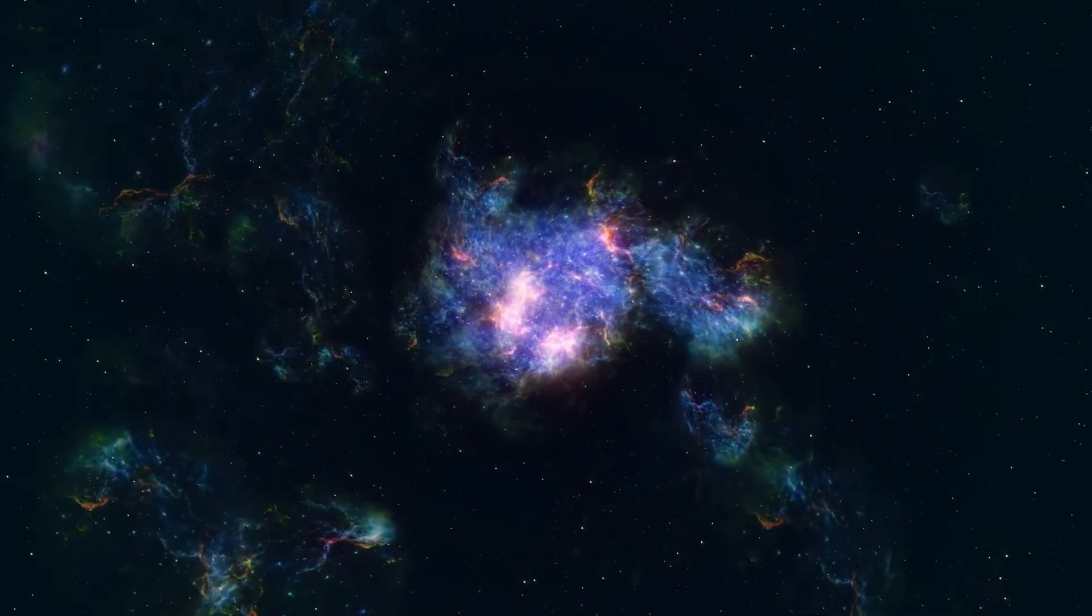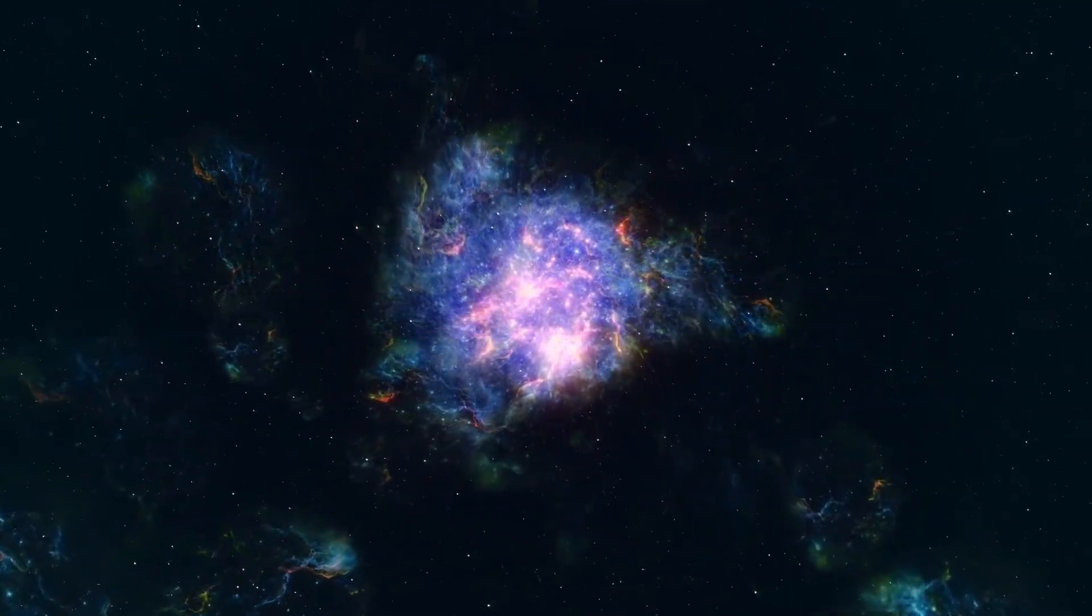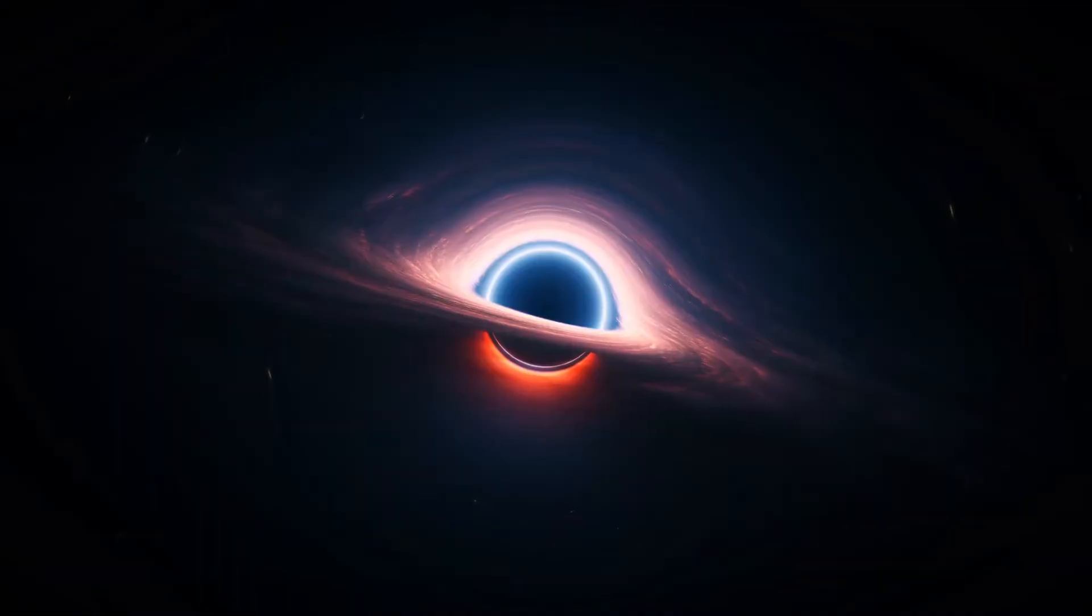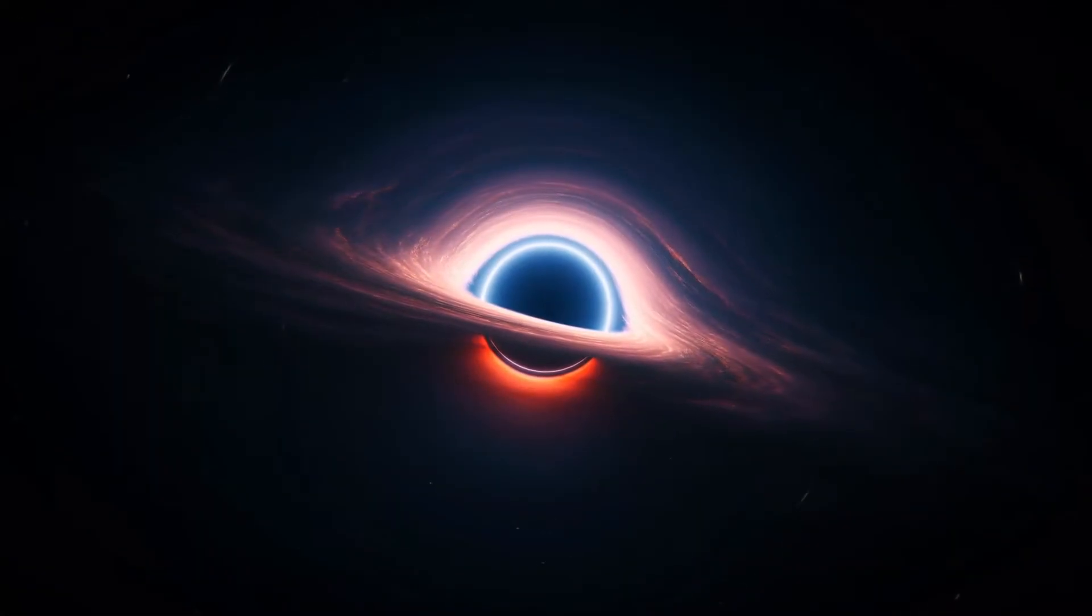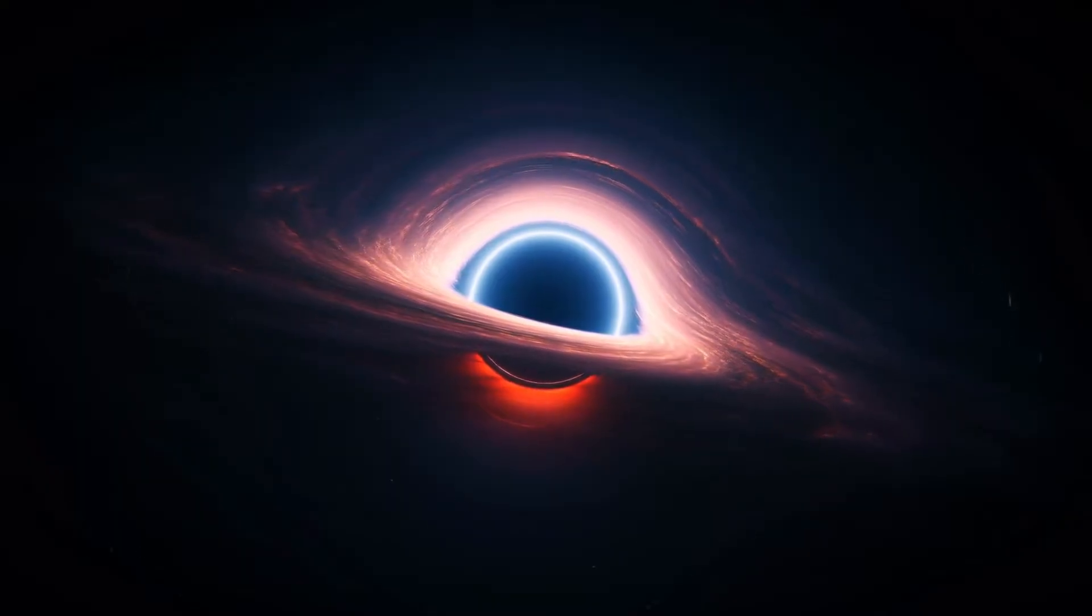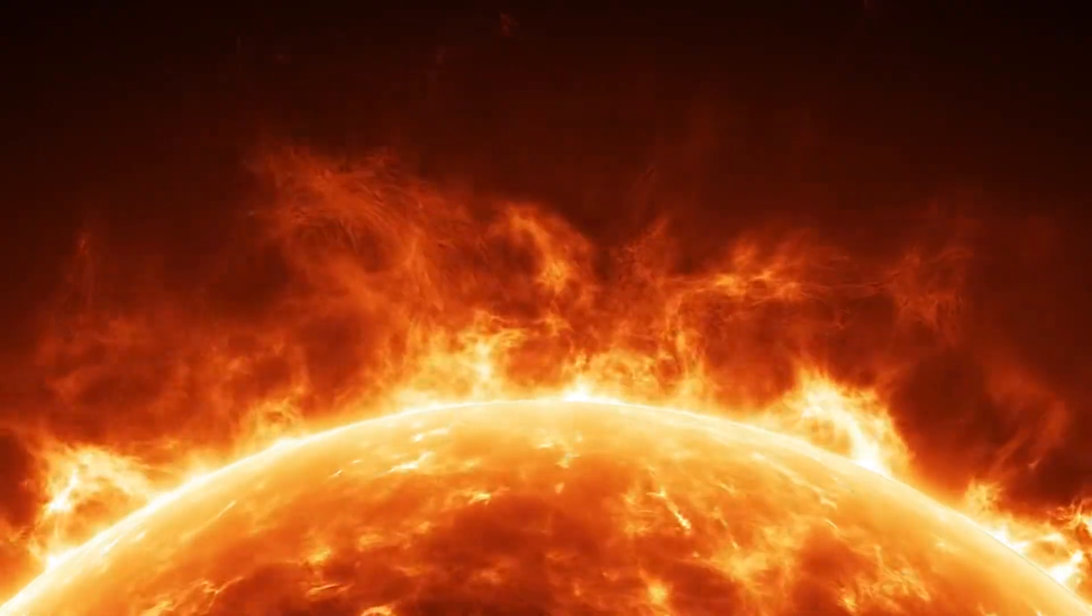These stars reached staggering speeds, up to 10,000 kilometers per second at their closest approach, roughly 3% of the speed of light. Through these measurements, the teams narrowed down the black hole's position and estimated its gravitational pull, indicating a mass approximately 3 million times that of our sun.